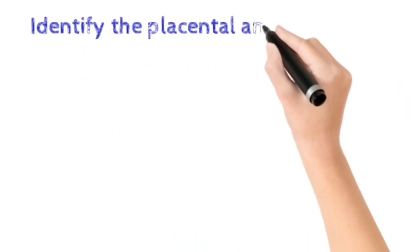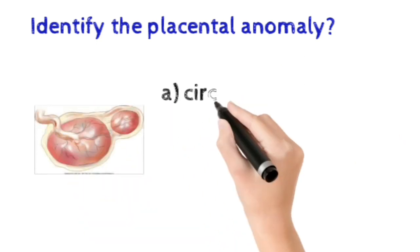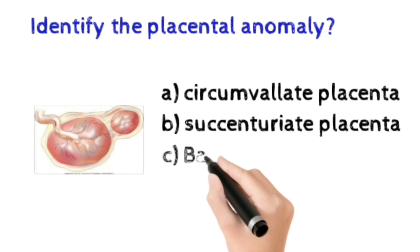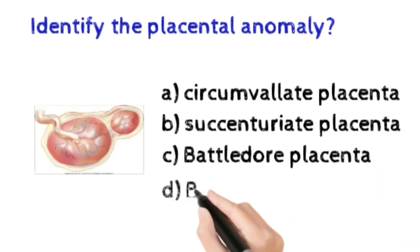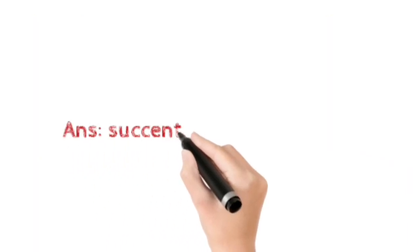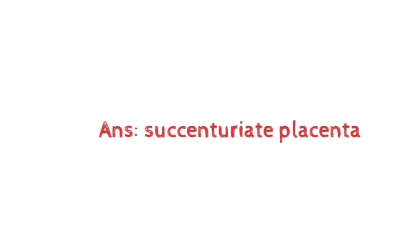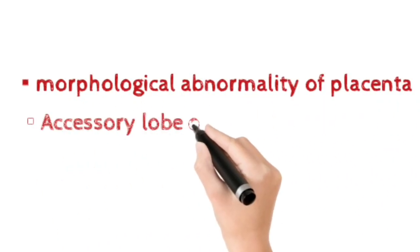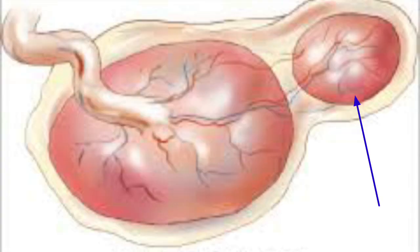Number four: identify the placental anomaly. Option A: Circumvallate placenta, Option B: Succenturiate lobe of placenta, Option C: Battledore placenta, Option D: Bipartite placenta. The correct answer is Option B, Succenturiate placenta. Succenturiate placenta is a morphological abnormality of the placenta in which an accessory lobe is present.